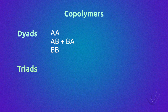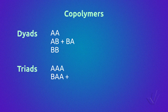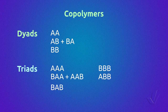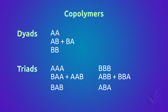The possible triads are six. Three are centered in monomer A: AAA, AAB plus BAA, and BAB. Three are centered in monomer B: BBB, ABB plus BBA, and ABA. The same simplification done for the asymmetric diad is sometimes made for the asymmetric triads.